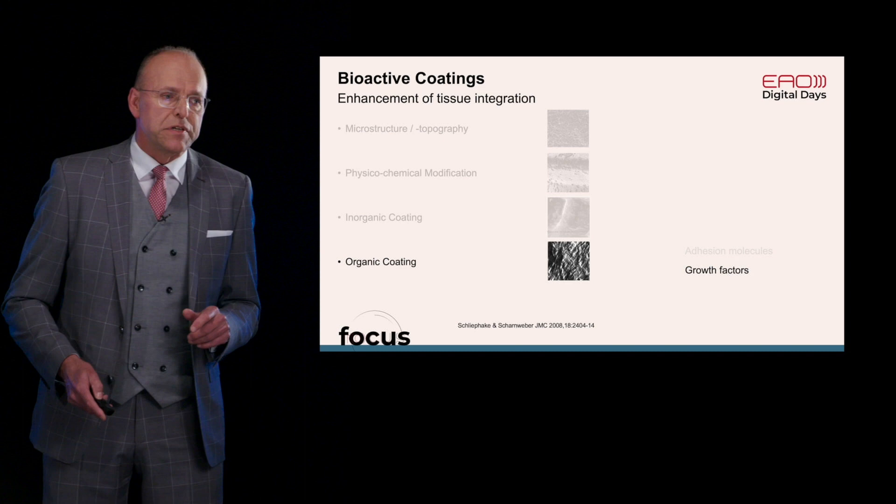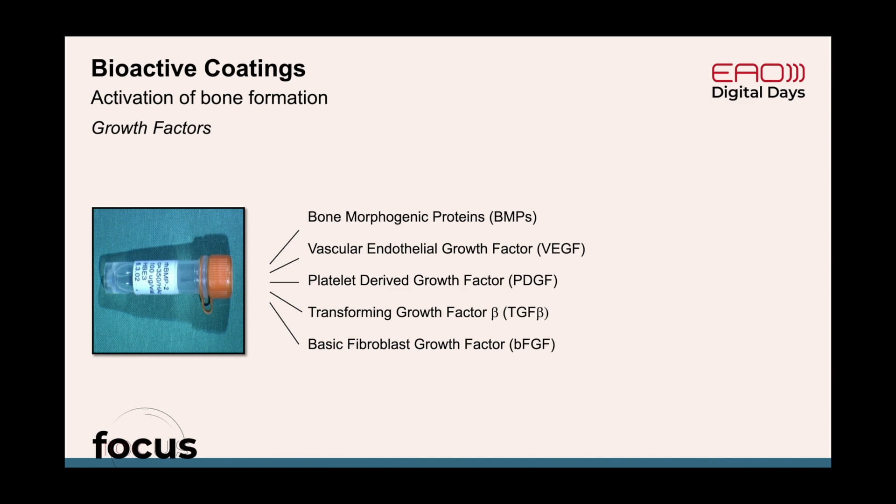For bone regeneration, a number of growth factors are involved: namely bone morphogenic proteins, vascular endothelial growth factor, platelet-derived growth factor, transforming growth factor beta, and basic fibroblast growth factor. All of them are involved in bone regeneration, but the most prominent are probably the family of bone morphogenic proteins because they are directly osteogenic.